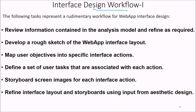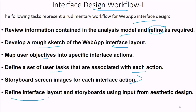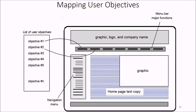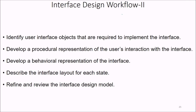For the interface design workflow, first review information in the analysis model and refine as required. Develop a rough sketch of the web app interface layout. Map user objectives into specific interface actions and define user tasks associated with each action. Storyboard screen images for each interface action, then refine the interface layout and storyboard using input from aesthetic design. Identify user interface objects required to implement the interface, develop a procedure for user interaction, develop a behavioral representation of the interface, describe the interface layout of each state, then verify and review.